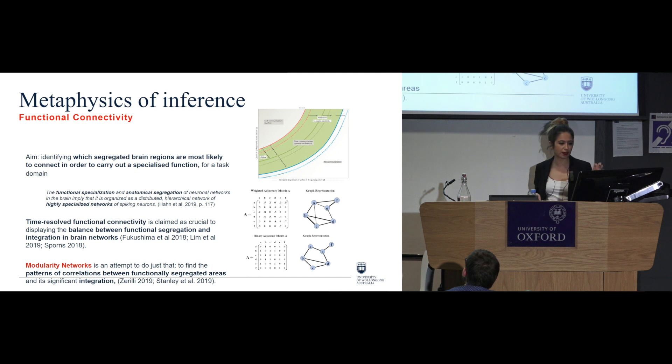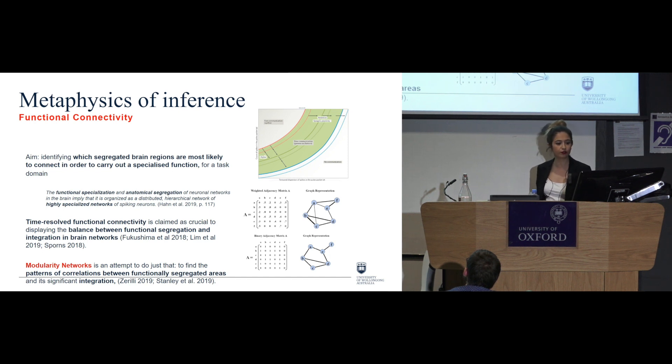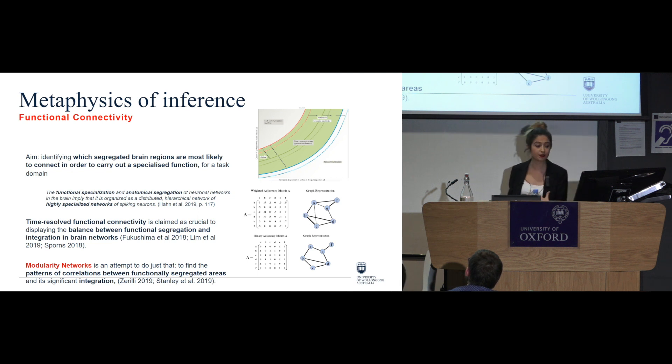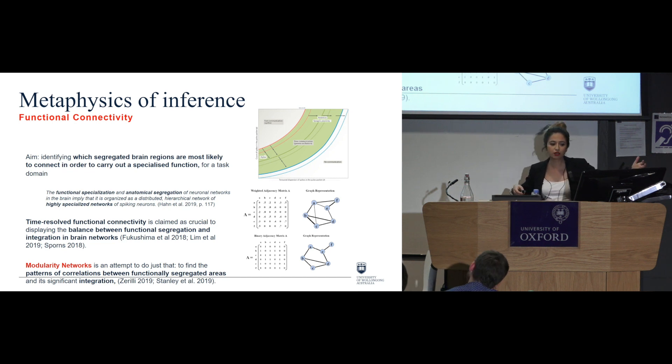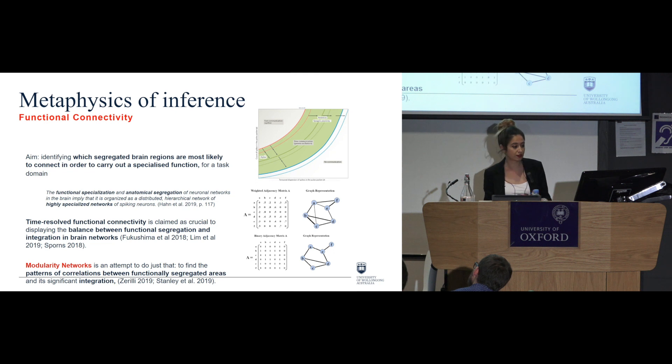And I think Han and colleagues capture this really well when they say that the functional specialization and anatomical segregation of neural networks in the brain imply that it is organized as a distributed hierarchical network of highly specialized networks of spiking neurons. So the idea is that there's this time-resolved functional connectivity, which is claimed as crucial to displaying a sort of a balance between, on the one hand, functional segregation and on the other hand, integration of brain networks. And here is where modularity networks come handy and particularly important because it attempts to do just that, to find the patterns of correlations between functionally segregated areas on the one hand and its significant integration on the other hand and that's where it becomes quite important.